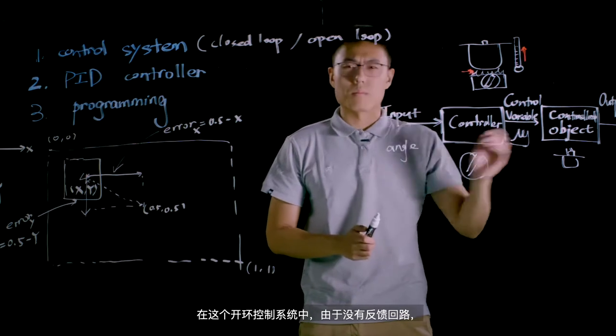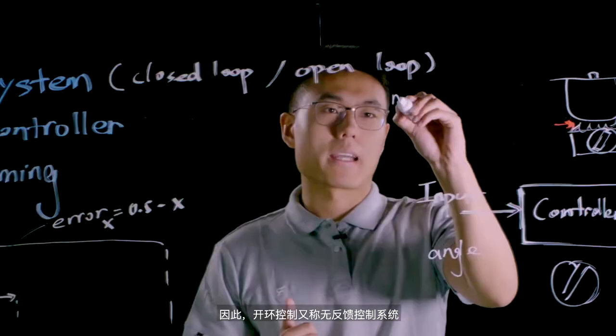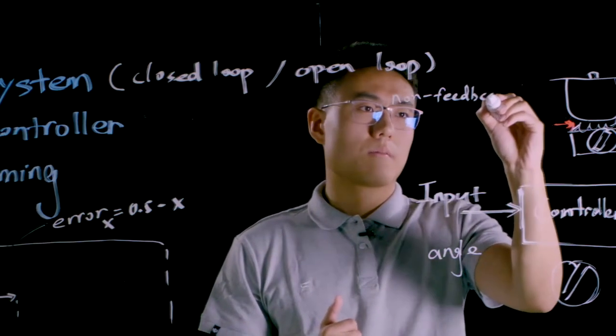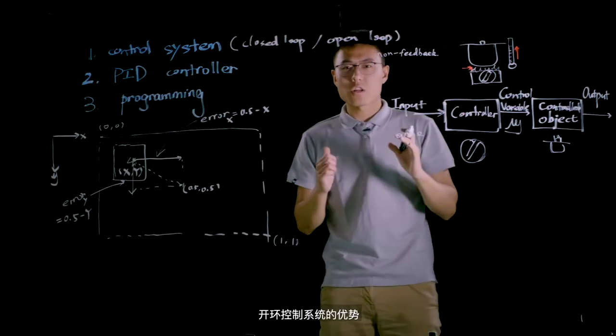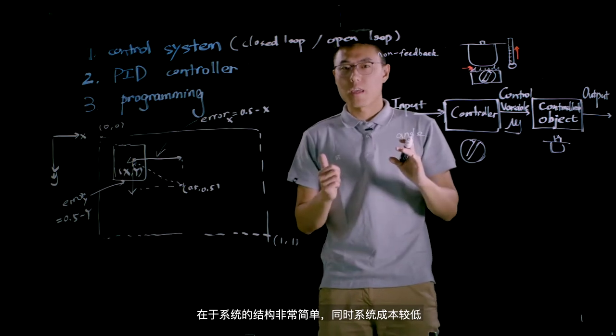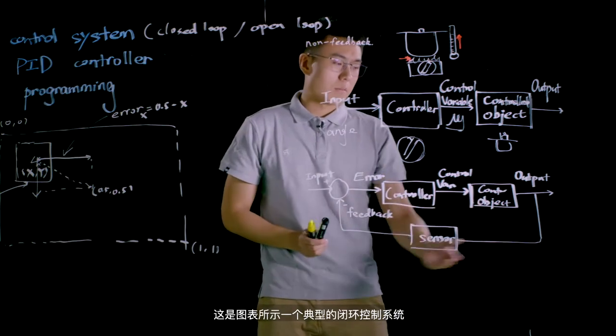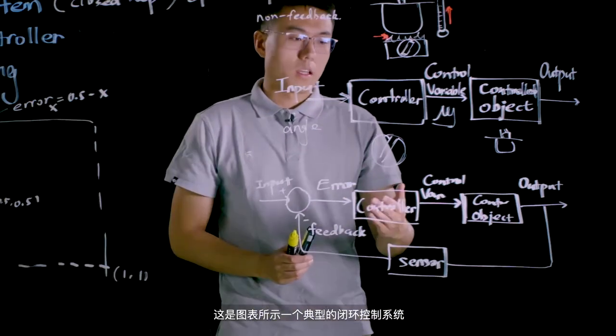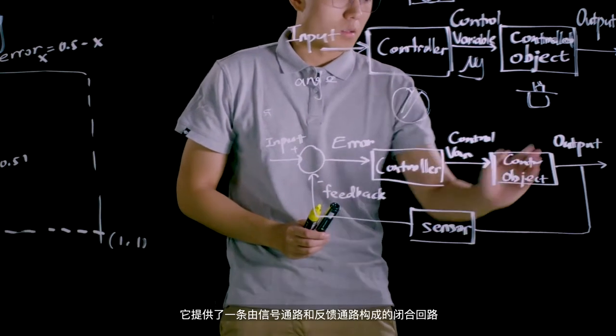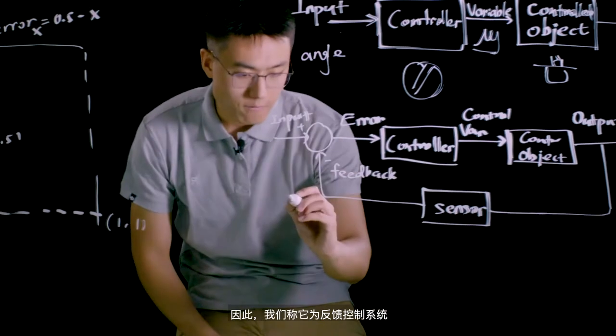In this open-loop system, there is no feedback from the output value, so we also call this system a non-feedback control system. The advantage of this open-loop control system is it has simple structure and very low cost. Let's take a look at the closed-loop control system. Here's a diagram for the typical closed-loop control system. Different from open-loop control system, there's a sensor over here, and it provides a signal path and forms a feedback loop. So it's also called a feedback control system.